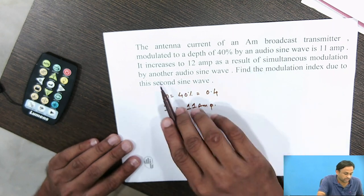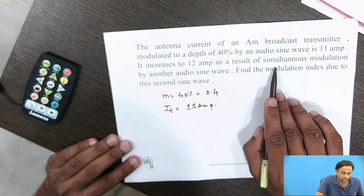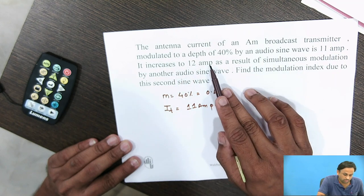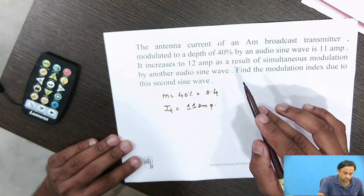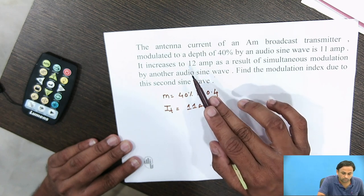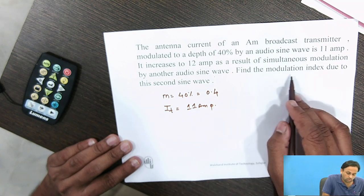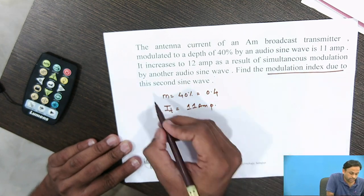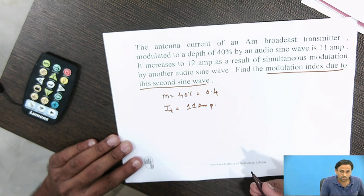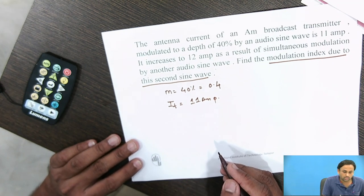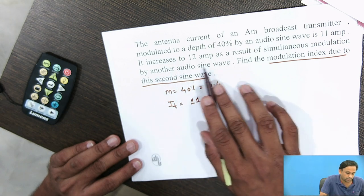The second statement is: the current increases to 12 amperes as a result of simultaneous modulation by another audio sine wave. So when one more modulating signal is applied, IT increases to 12 amperes. We need to find the modulation index due to this second sine wave. This example illustrates how the modulation index is calculated for multiple sine waves.